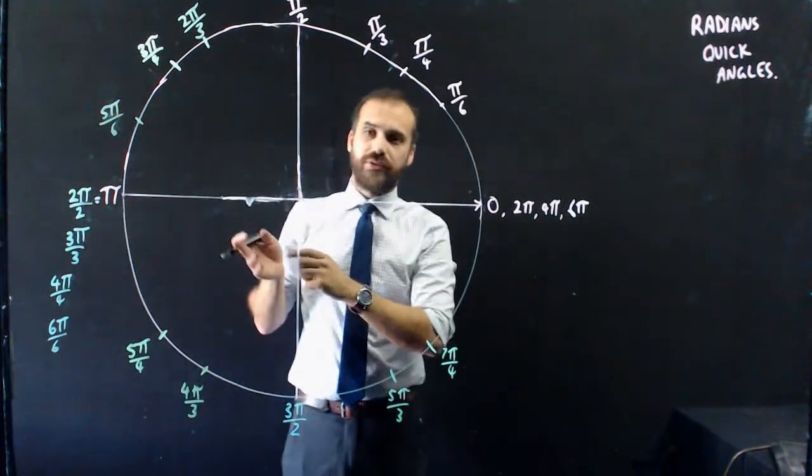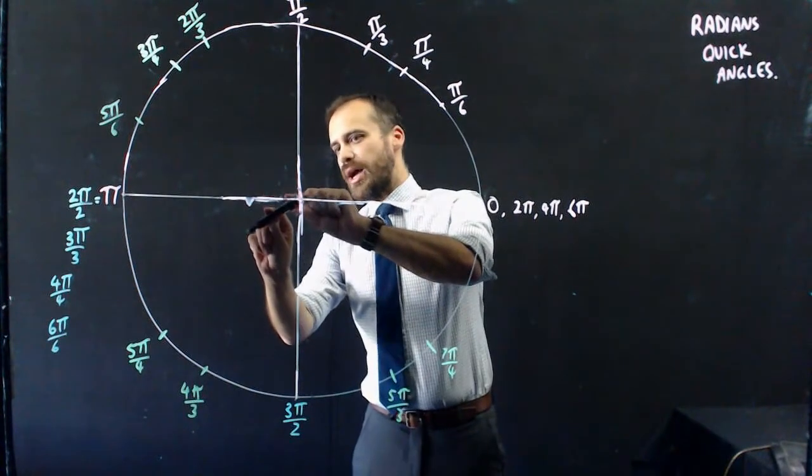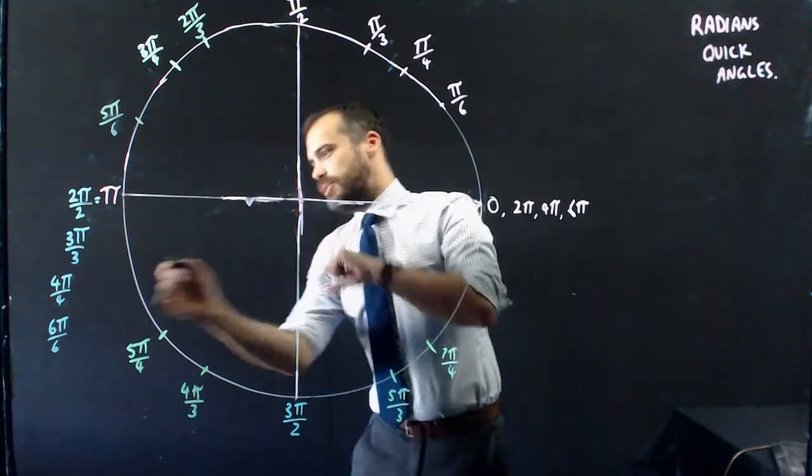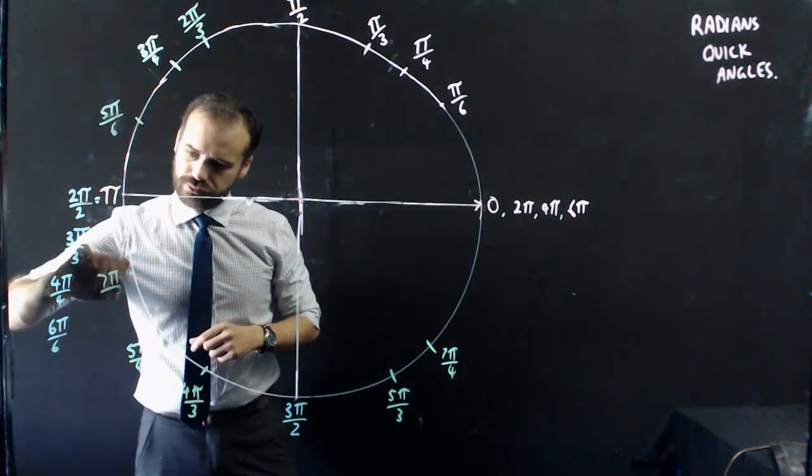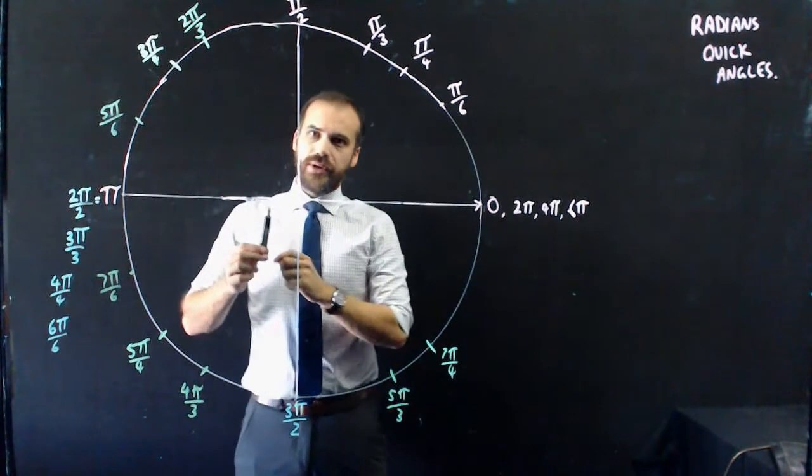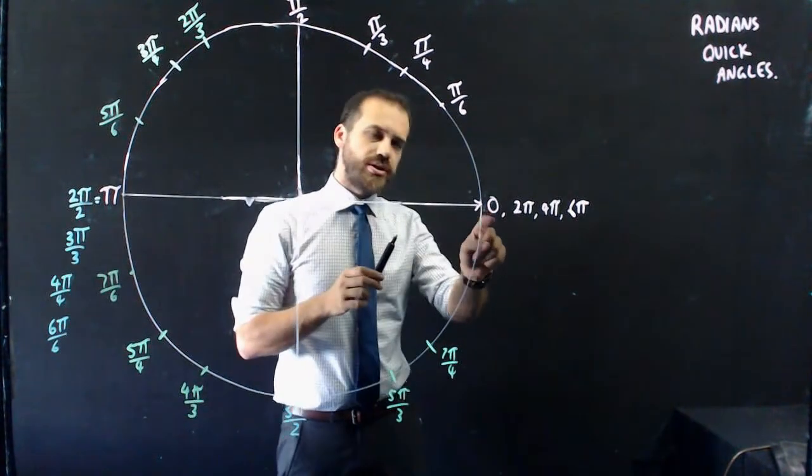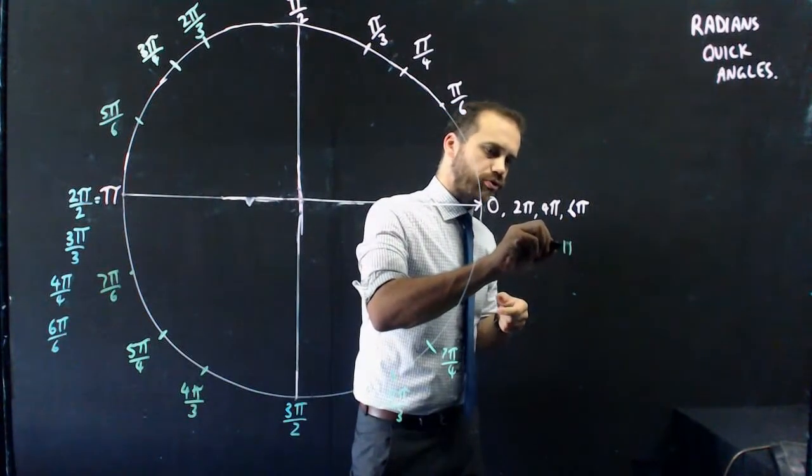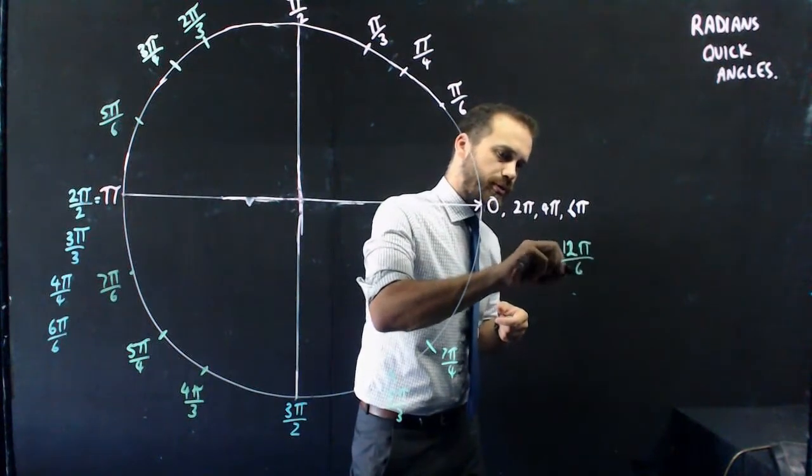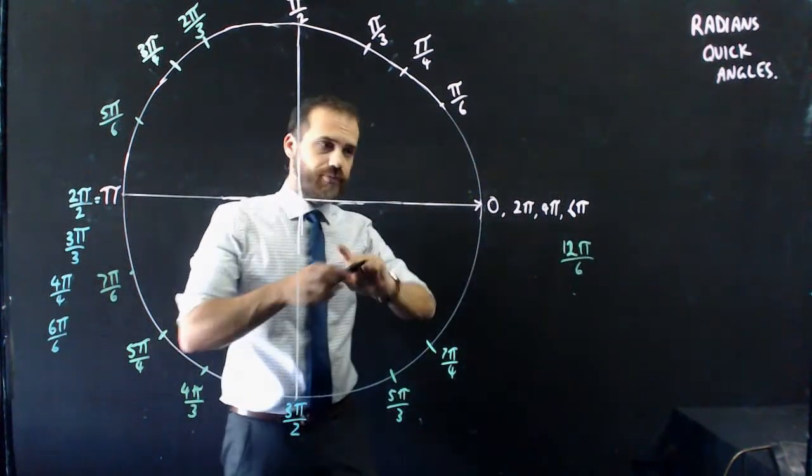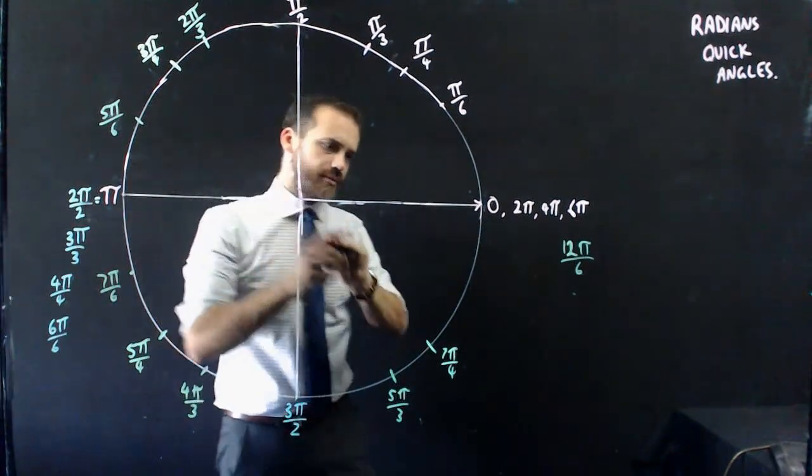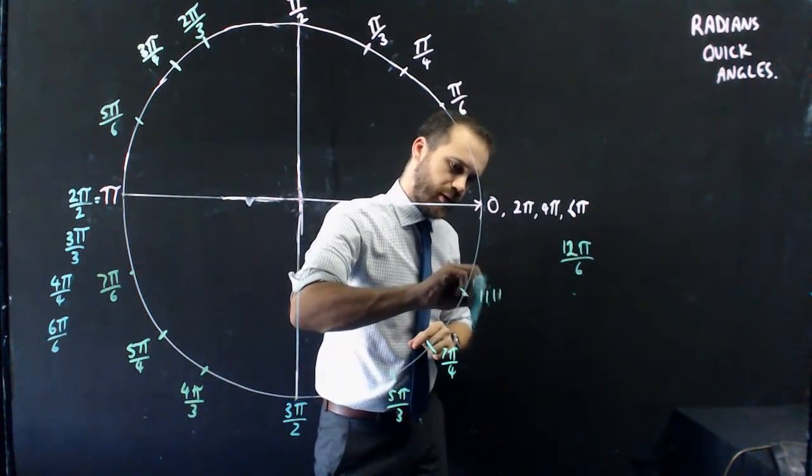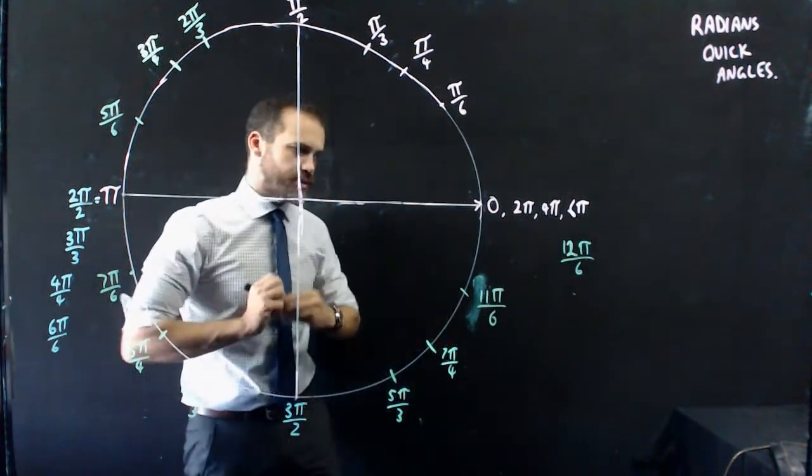That corresponds with 150 degrees. This was 6π/6. We add an extra 30 degrees, so like 210, we end up at 6π/6 plus π/6, which is 7π/6. And finally, I'm going to cheat here. I said this is 0, 2π, 4π, and 6π, but it's also 12π/6. 12π/6 is the same as 2π. 12π/6 minus π/6 - running out of steam - is 11π/6.